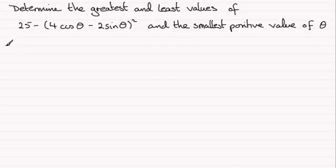So to do this, if we write this expression down, that is 25 minus (4 cos θ minus 2 sin θ)², well this is going to be identical to the first term 25, but in a previous part of this question we had to express 4 cos θ minus 2 sin θ in the form r cos(θ + α).